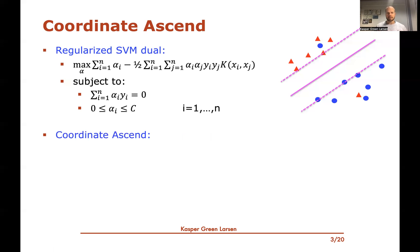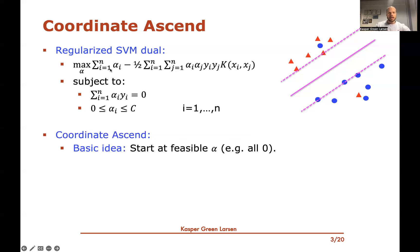Let me first give you the basic idea in coordinate ascent, and then show you why it doesn't work and how we can fix it. The basic idea in coordinate ascent is something similar to gradient descent. You start somewhere in a feasible solution, which means one that satisfies the constraints. An easy way to satisfy all these constraints is to set all the alpha_i's to zero, which clearly satisfies all alpha_i being between zero and c, and also that the sum of alpha_i y_i is zero.